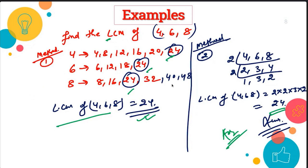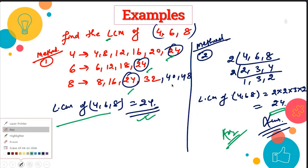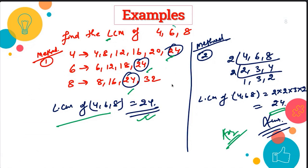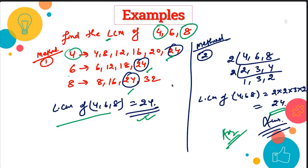Now, if I ask you to find the LCM of only four and six, what is the LCM of four and six? 12 — very good! 12 is the number because 12 is present in both four and six. Now, if you are going to find the LCM of six and eight, what is the LCM? 24 — 24 is the only number common between them. And the LCM of four and eight? That is eight, because eight is present in both the numbers.